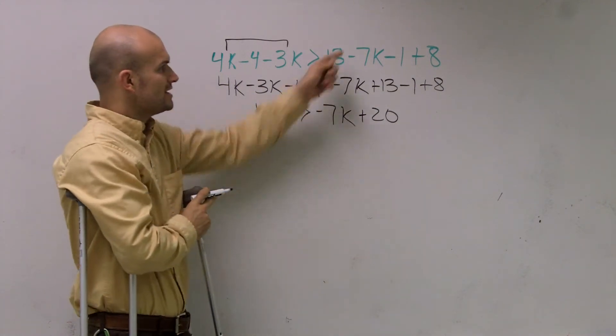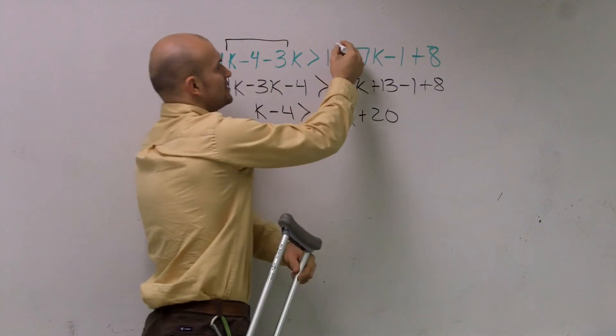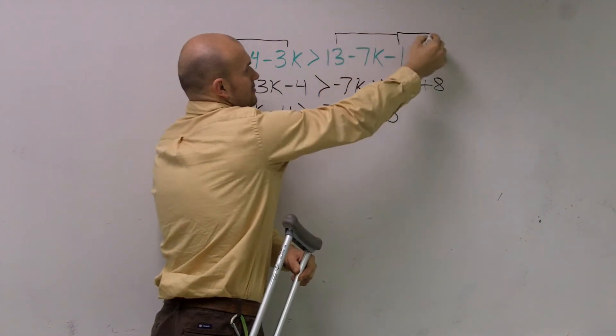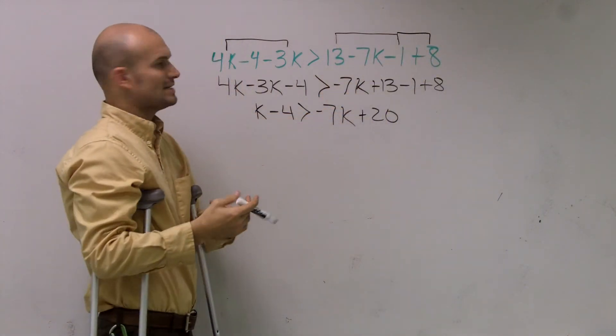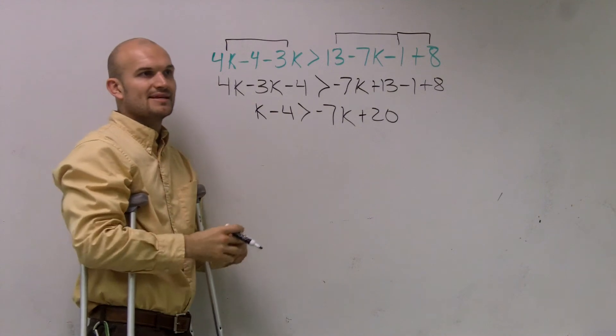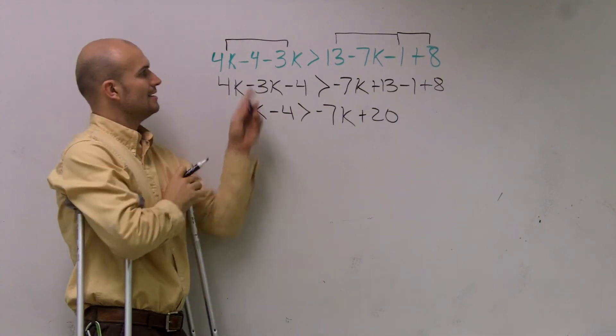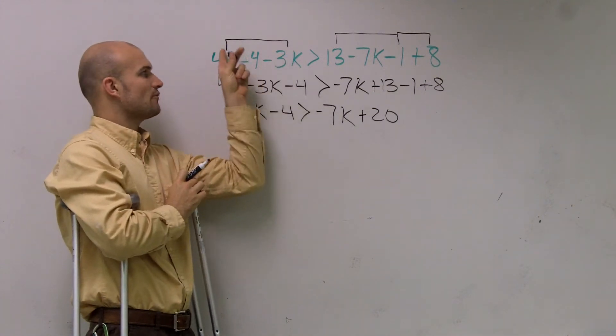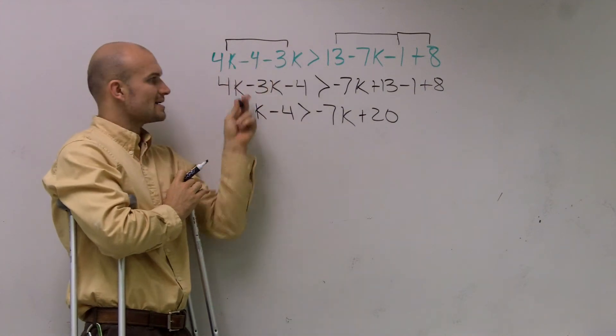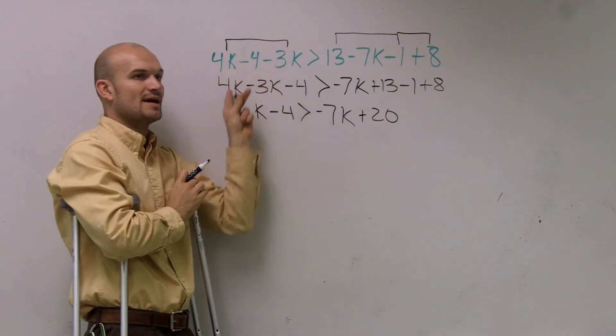And like I said, you don't need to rearrange it. You could have said 13 minus 1 plus 8, right? I just did that to kind of help you see it better. Over here, you didn't need to rearrange it. You could have said 4k minus 3k is k.